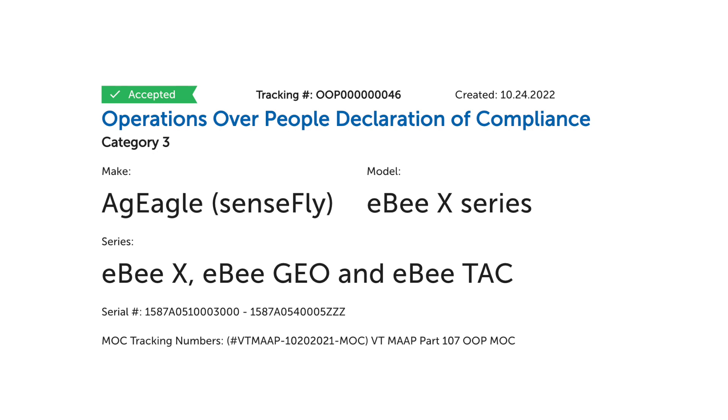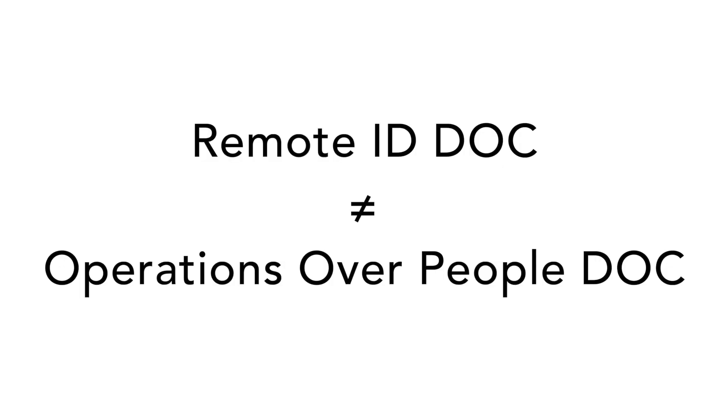So what is a declaration of compliance? Simply put, a declaration of compliance — which we'll abbreviate DOC — is a letter stating that your drone meets certain technical specifications to operate under certain rules. For example, to participate in sustained flight over people, your drone needs to meet certain safety requirements. It can't be so heavy that if it fell out of the sky, it would completely crush someone. If it meets those requirements, it gets a DOC certifying that it is allowed to fly over people. There are currently two types of DOCs: a remote ID DOC and a DOC for flying over people. These two DOCs are completely separate things.